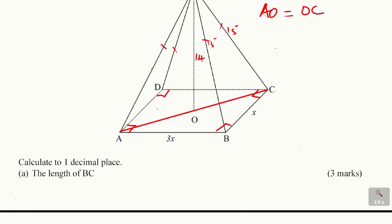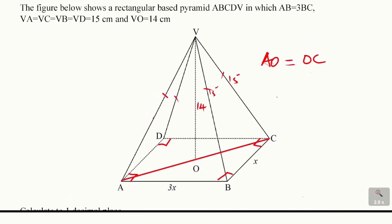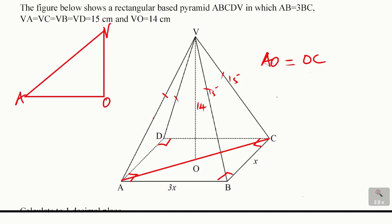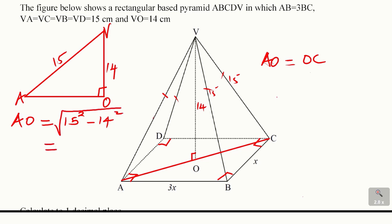Let's extract triangle VAO. V is the apex, O is the center, A is a base vertex. This height VO is perpendicular to the base, so we have a right angle and form a right-angle triangle. VO is 14 and VA is 15. Using Pythagoras' theorem, AO equals the square root of 15 squared minus 14 squared, which gives 5.385.